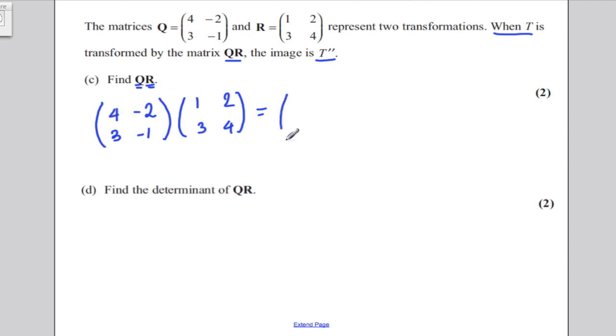Negative 2 times 3 is negative 6, so you get negative 2 here. 4 times 2 is 8, negative 2 times 4 is 0. 3 times 1 is 3, negative 1 times 3 is 3, so you get 0. And 3 times 2 is 6, negative 1 times 4 is negative 4, so you get 2 there. Simple for two marks.